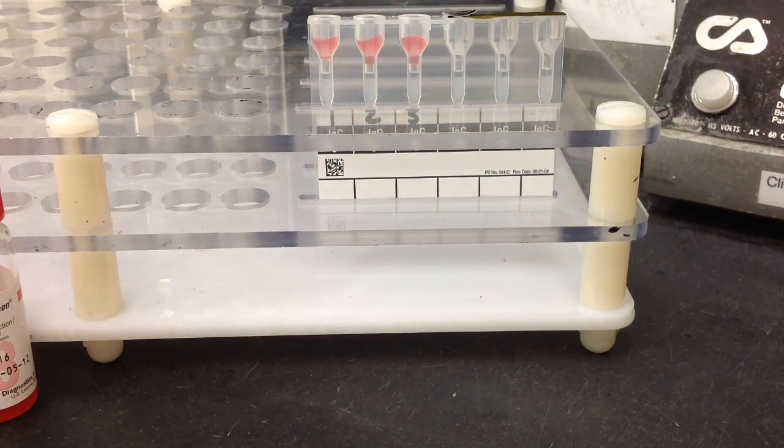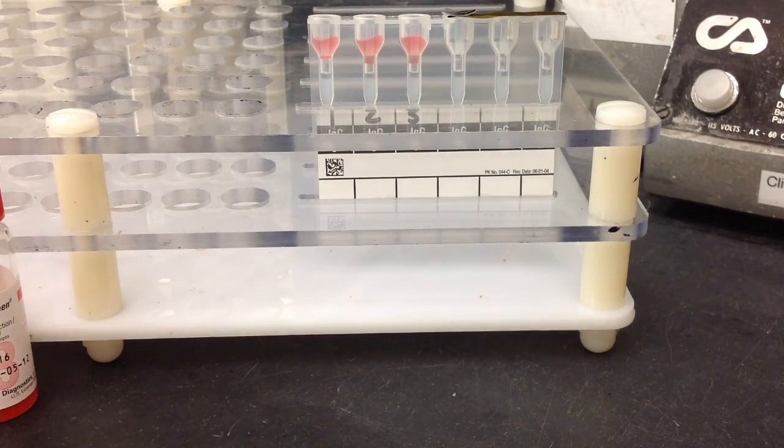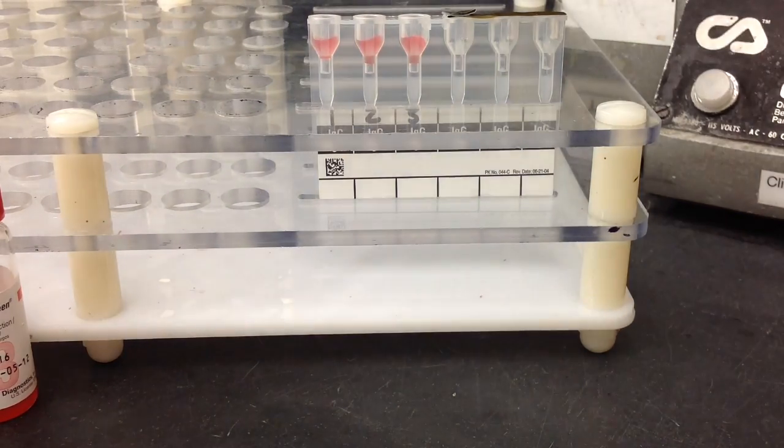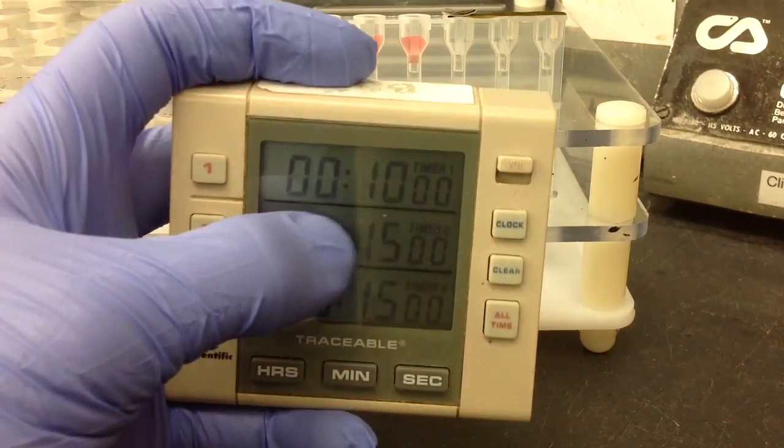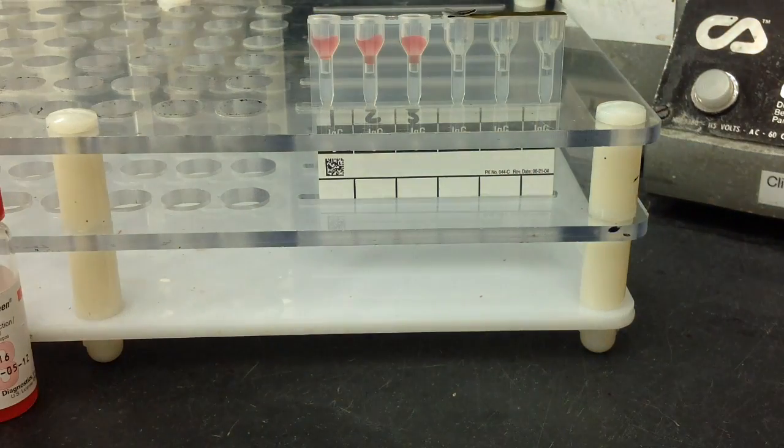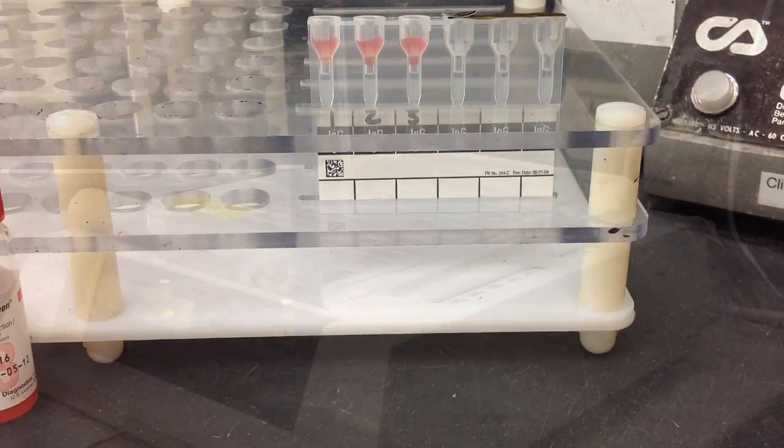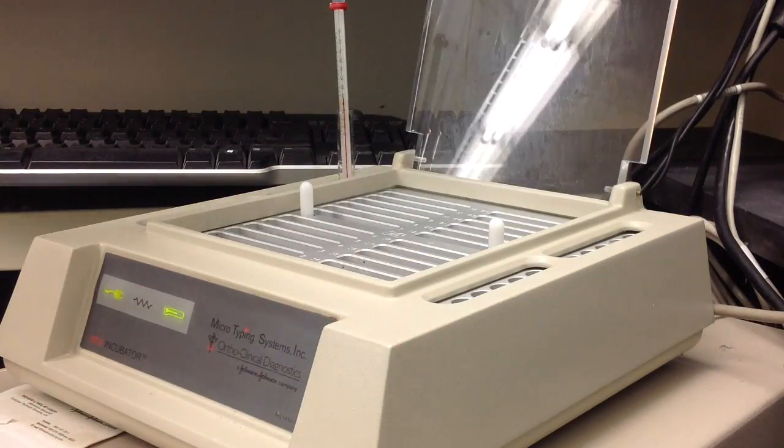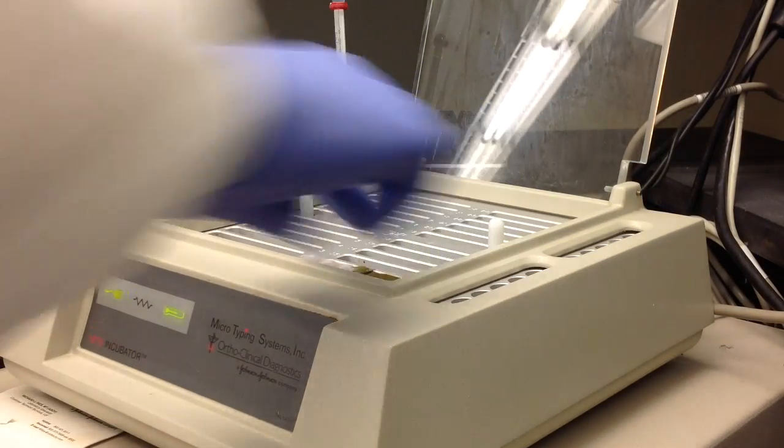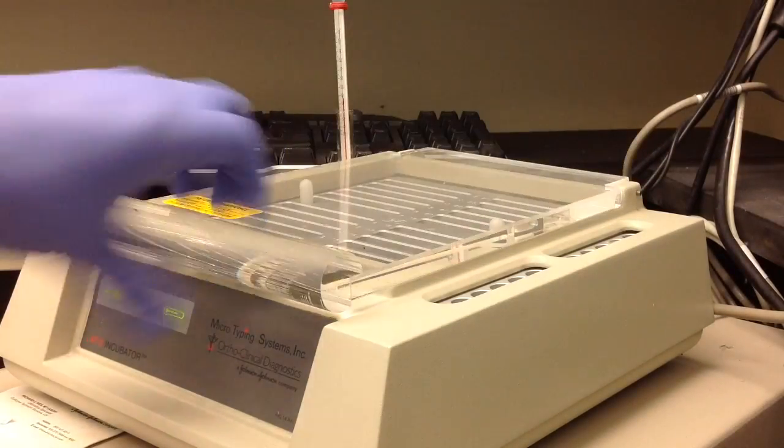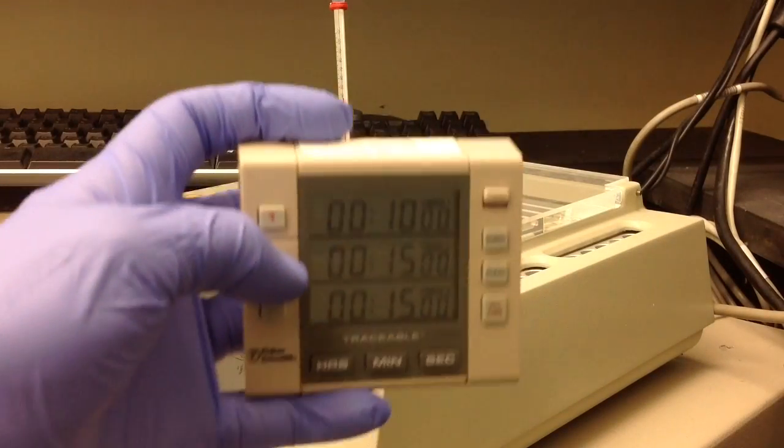Once you have your patient's plasma mixed in with the reagent red cells you're going to incubate it for 15 minutes in the OrthoTyping Systems incubator. You put the gel card in the incubator, close it up, and don't forget to set your timer for 15 minutes.